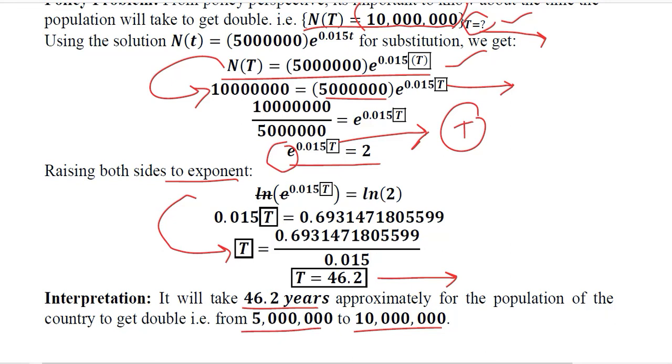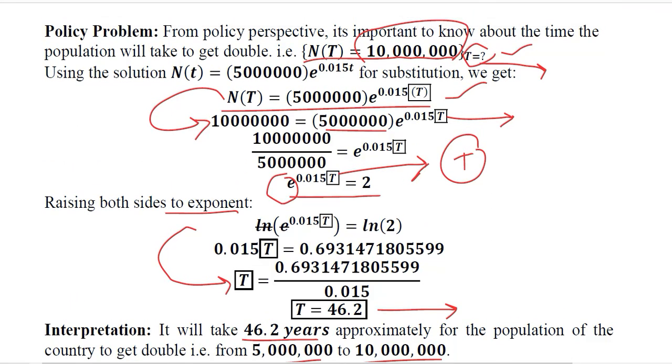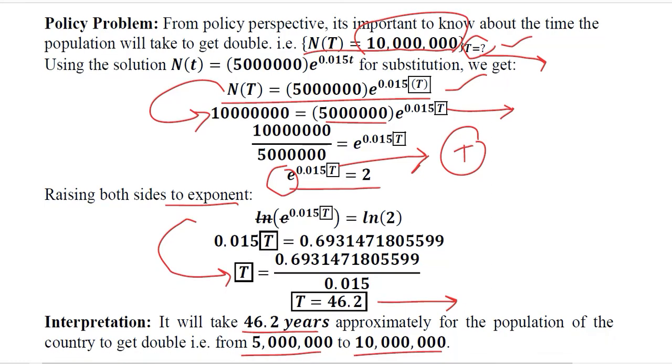It takes about 46.2 years for the population to get double. In this case we are capable of knowing that certain time period in which the population can grow to a certain level. It may be twice or thrice or more or less. This is how this time path can be of importance from the policy perspective. Thank you.